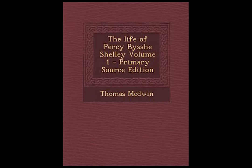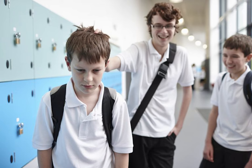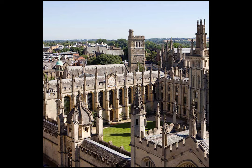When Shelley entered Eton College, the private boarding school, he was bullied often and had a rough time. Later on he attended Oxford but was soon kicked out due to a paper he anonymously published known as 'The Necessity of Atheism.'